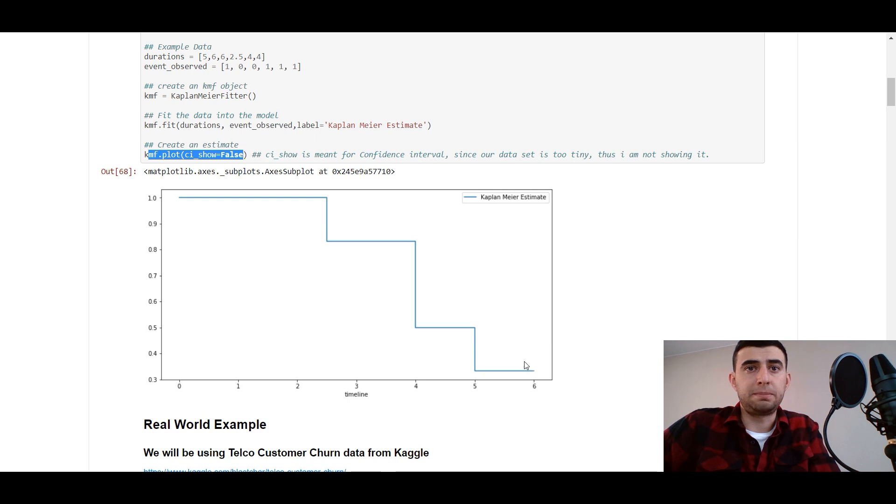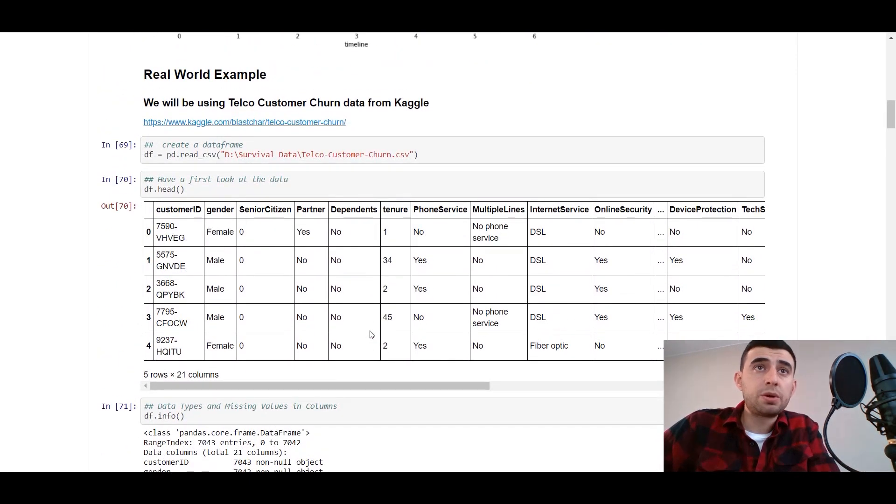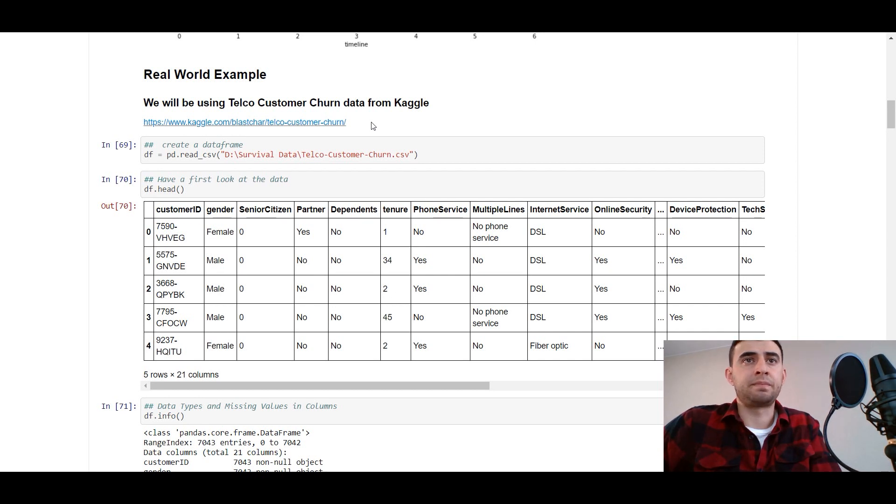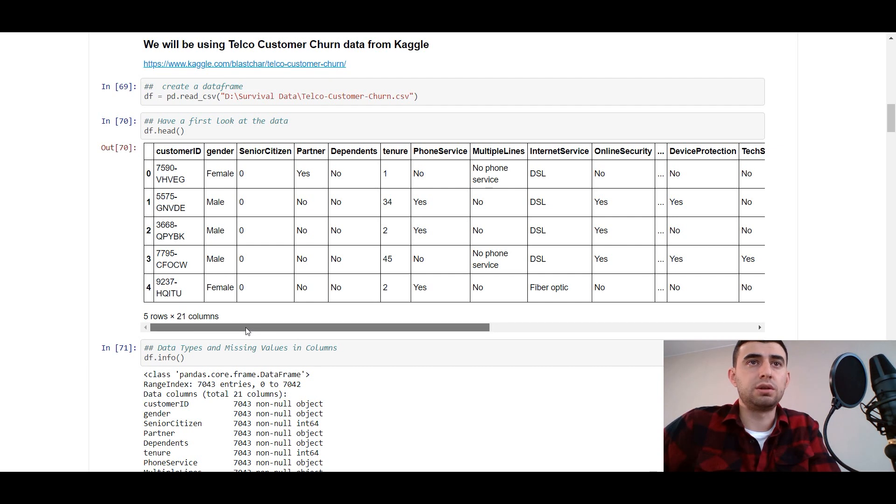Here it is, it is called survival curve. It means at the timeline, for example four, there is a 50% chance to survive. So let's do a real world example. We will be using Telco customer churn data from Kaggle. We are creating a dataframe with pandas read_csv method.